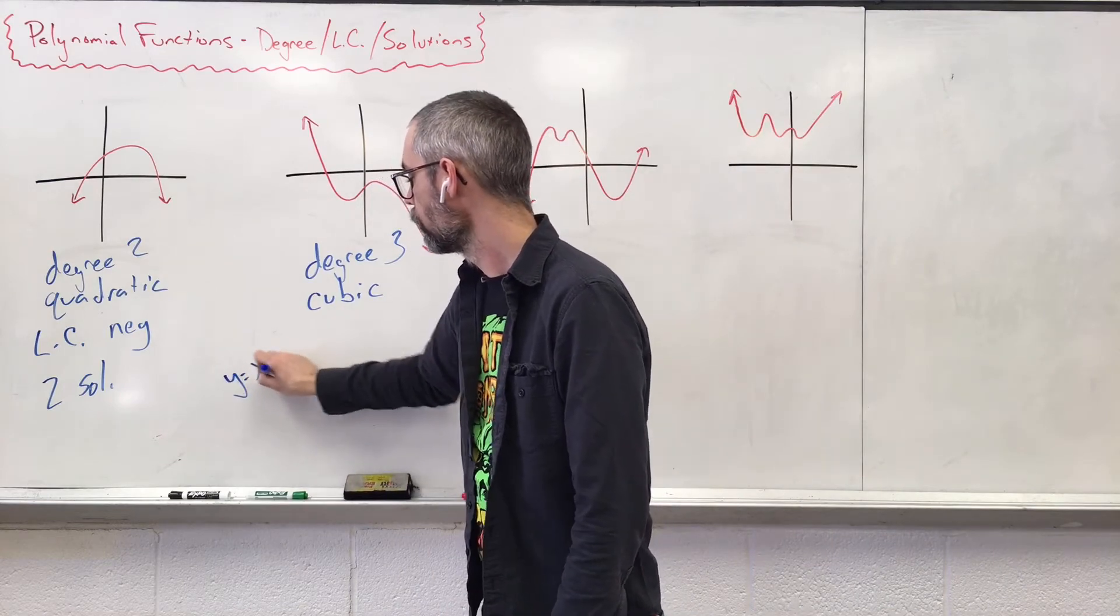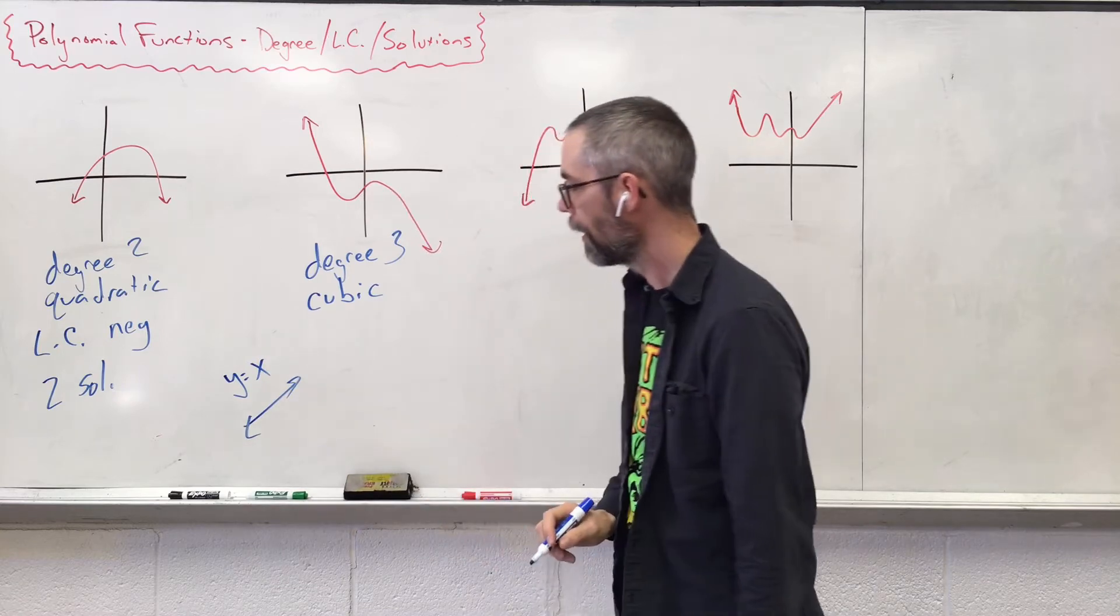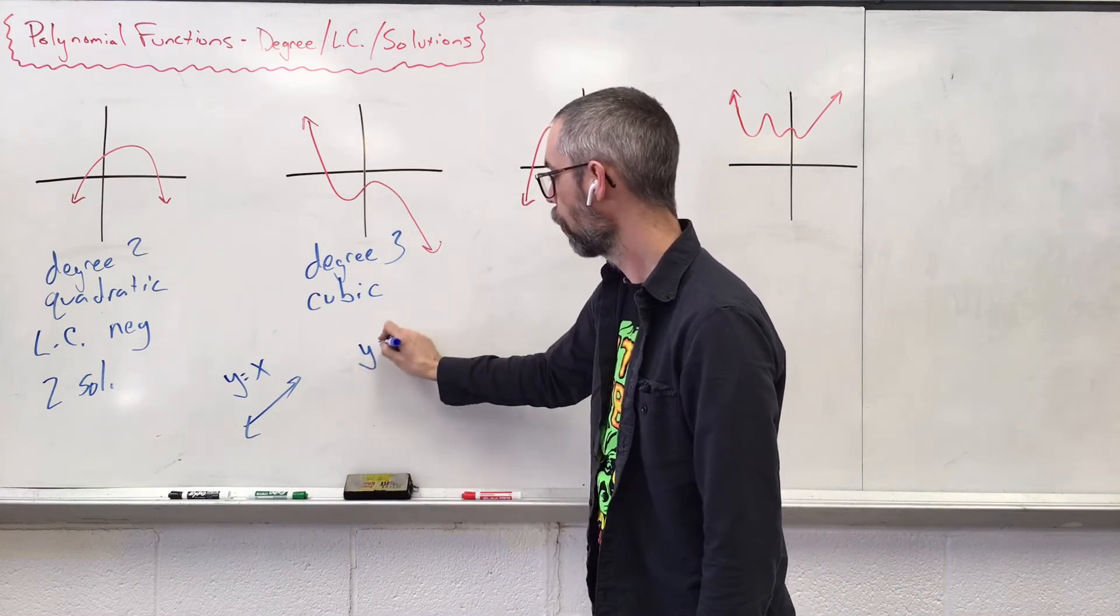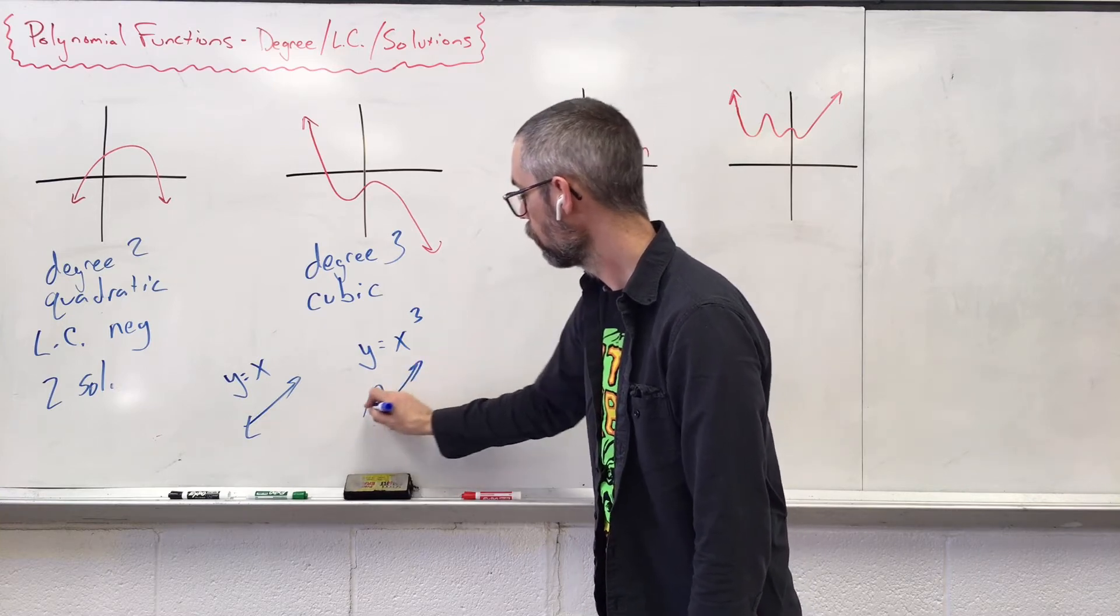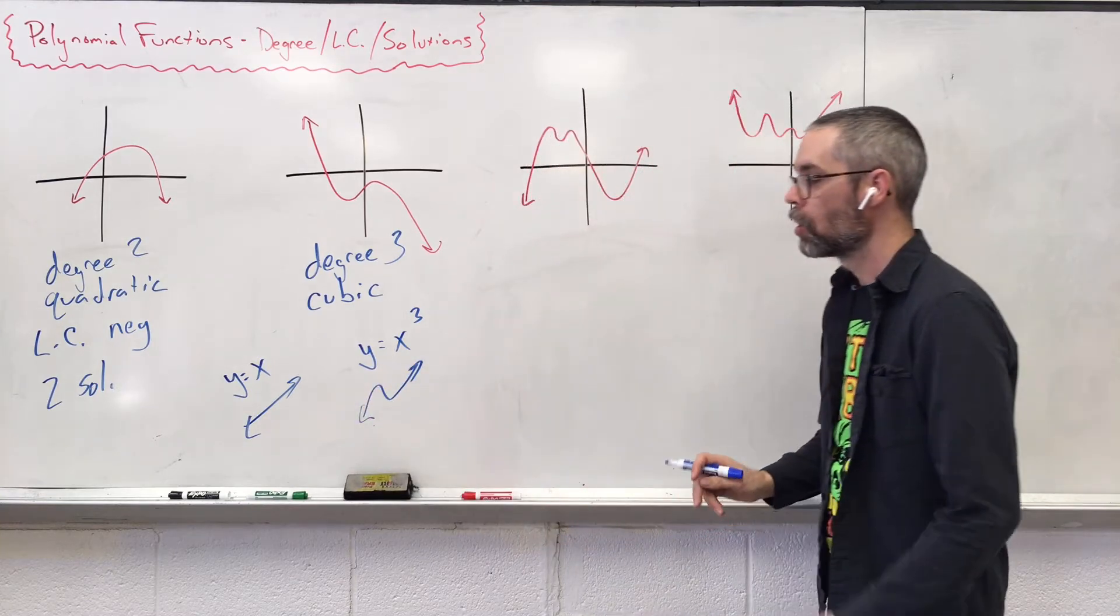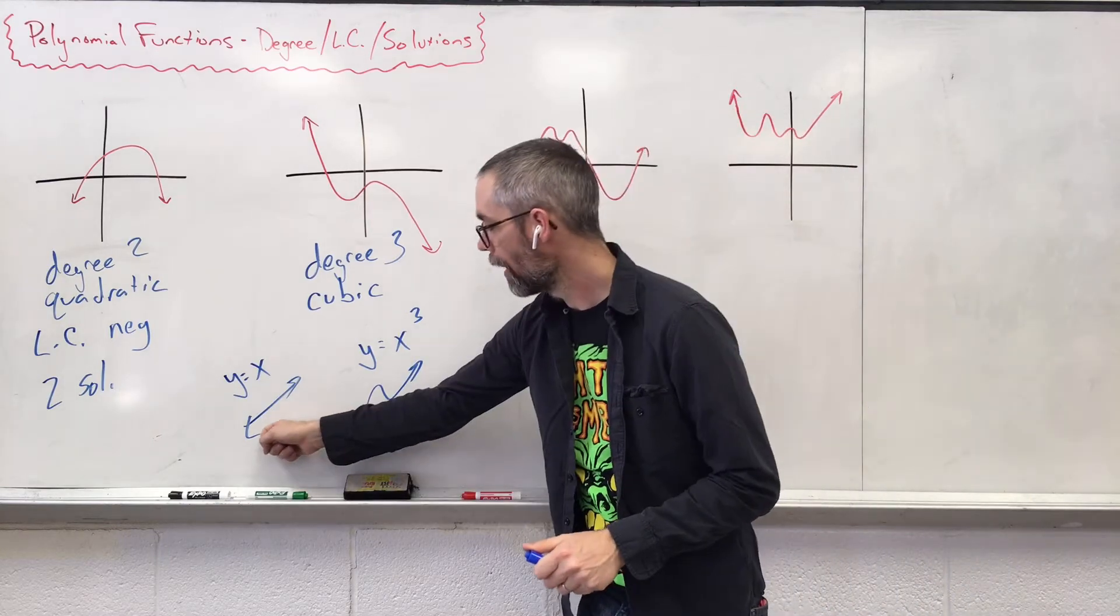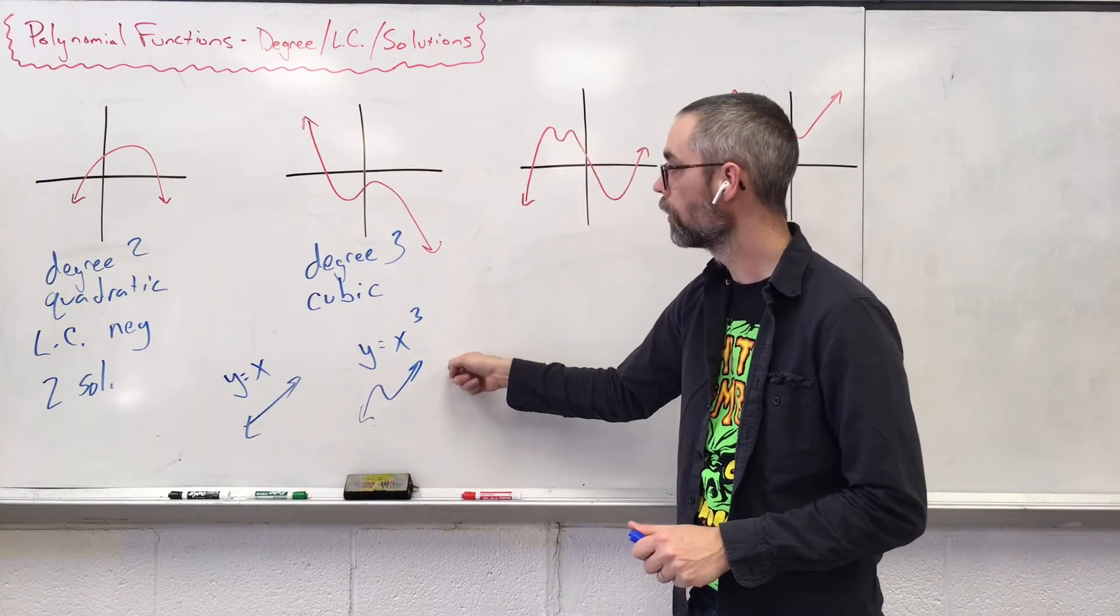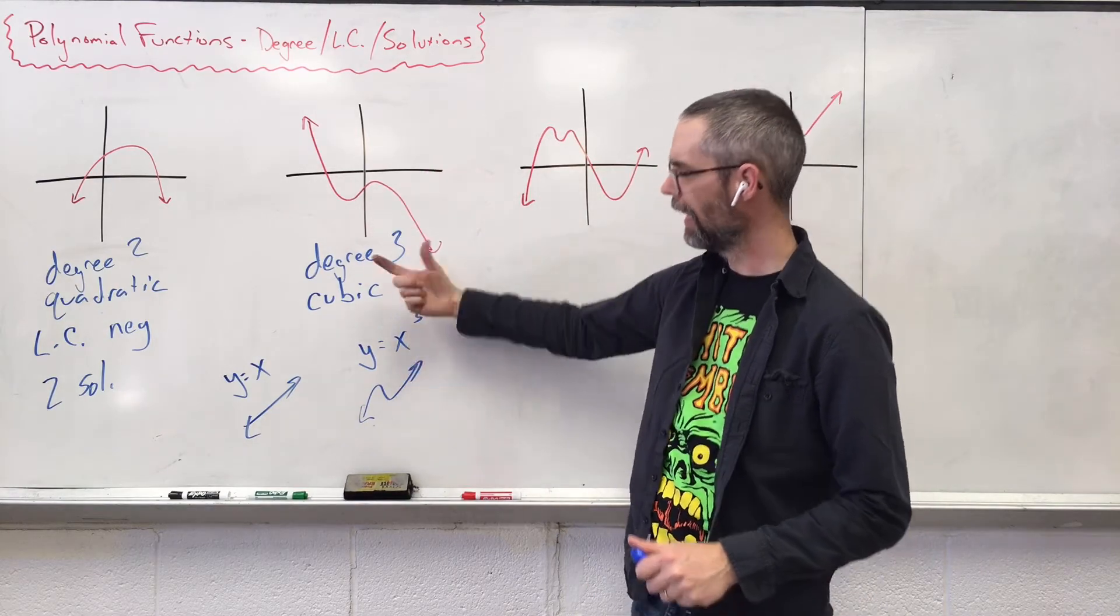Something that says y equals x, your line will look like that. Something that says y equals x to the third ended up looking like that. So when you have a positive problem, you have a positive slope.